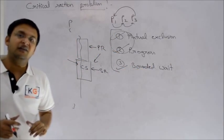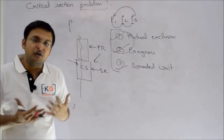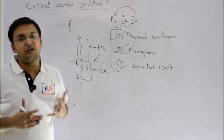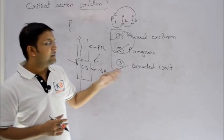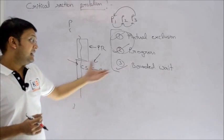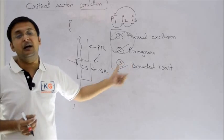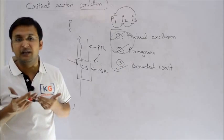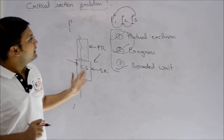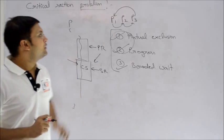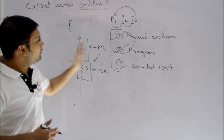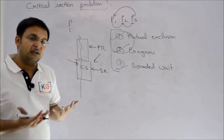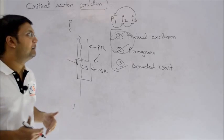The third one is bounded wait. It says there must be a maximum bound up to which a process can wait or a maximum number of turns, after which it should get a chance. I will try to fulfill this, but it's not necessary to fulfill it every time. Okay fine. Now in the next lecture, we'll try to take different solutions.